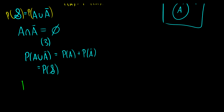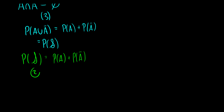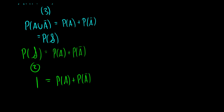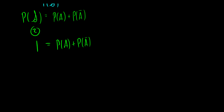So P(S) equals P(A) plus P(A-bar). Now, Axiom 2 says the probability of the sample space is always equal to one. So 1 equals P(A) plus P(A-bar). Using simple algebra we can claim that P(A-bar) equals 1 minus P(A). And thus we have concluded the proof that P(A-bar) equals 1 minus P(A), using our axioms.